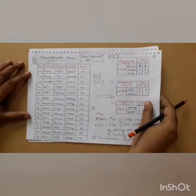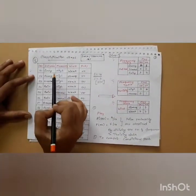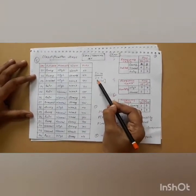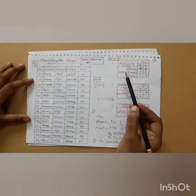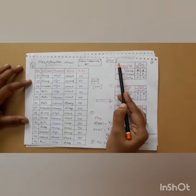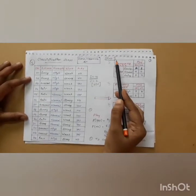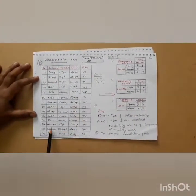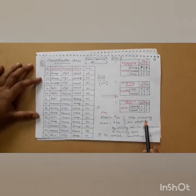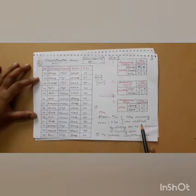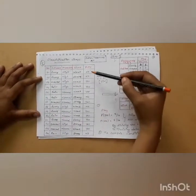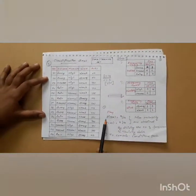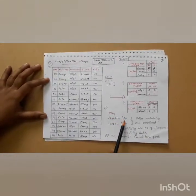This is the first step: get the training dataset, take the total number of samples, and compute the class instances. The second step is to calculate the prior probability. You have to compute how many yes instances and how many no instances are in the class. The probability of playing yes is equal to 9 by 14.